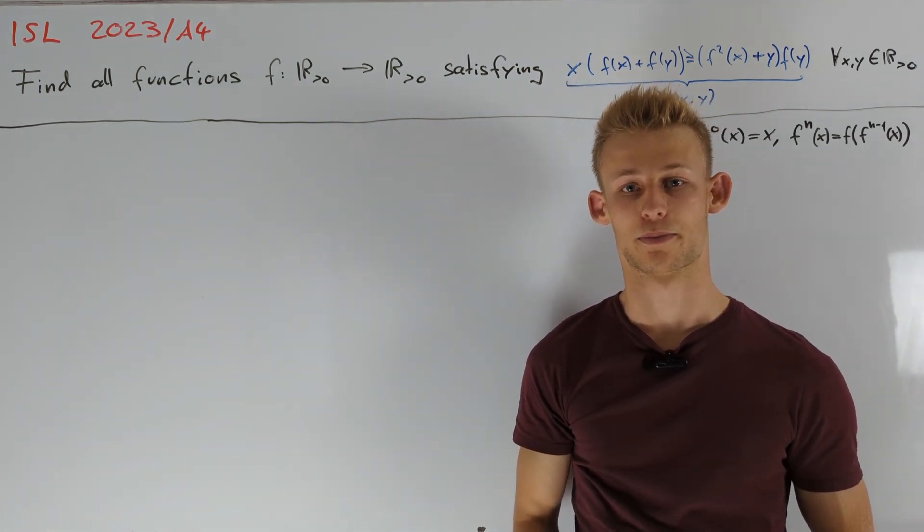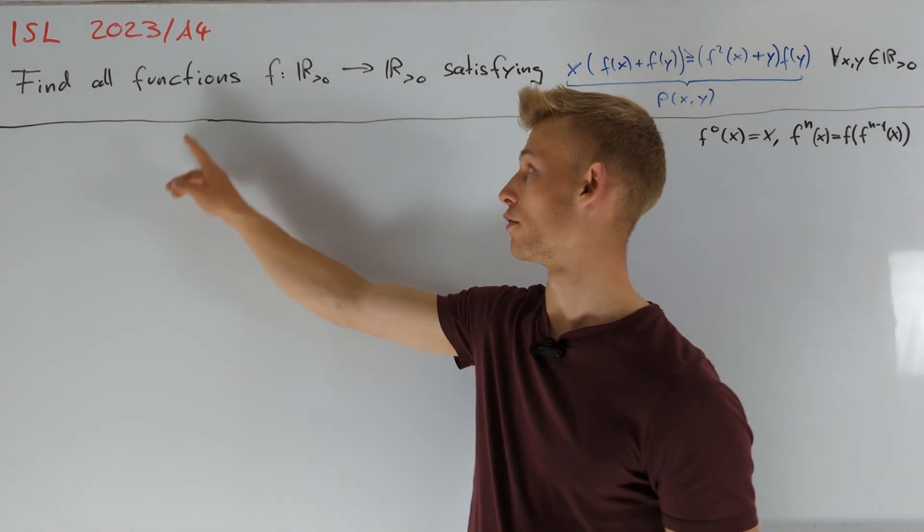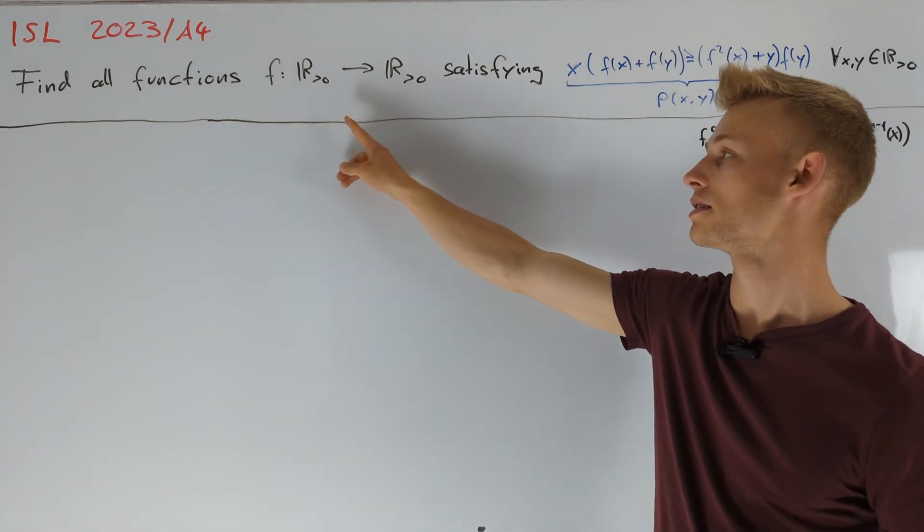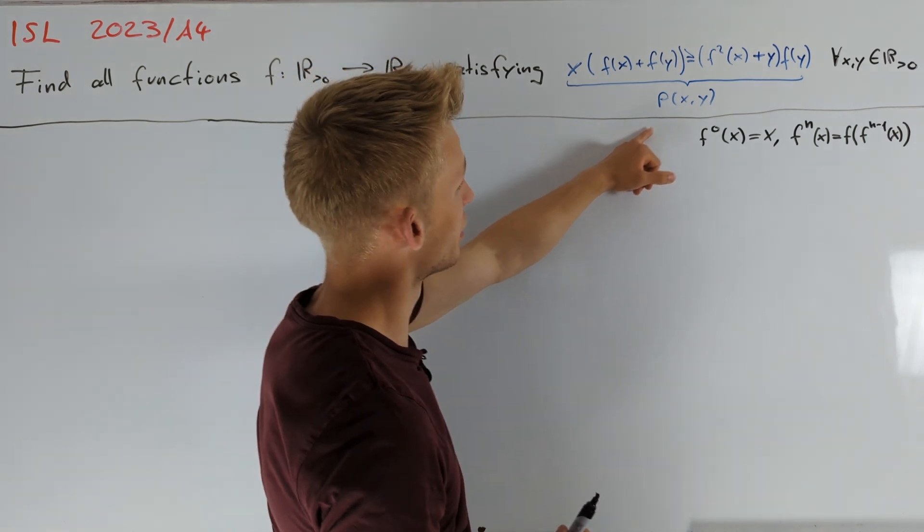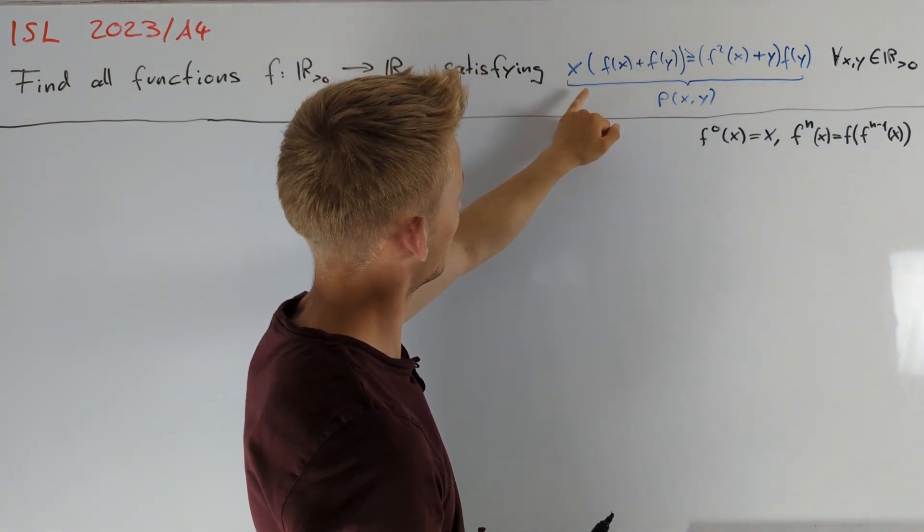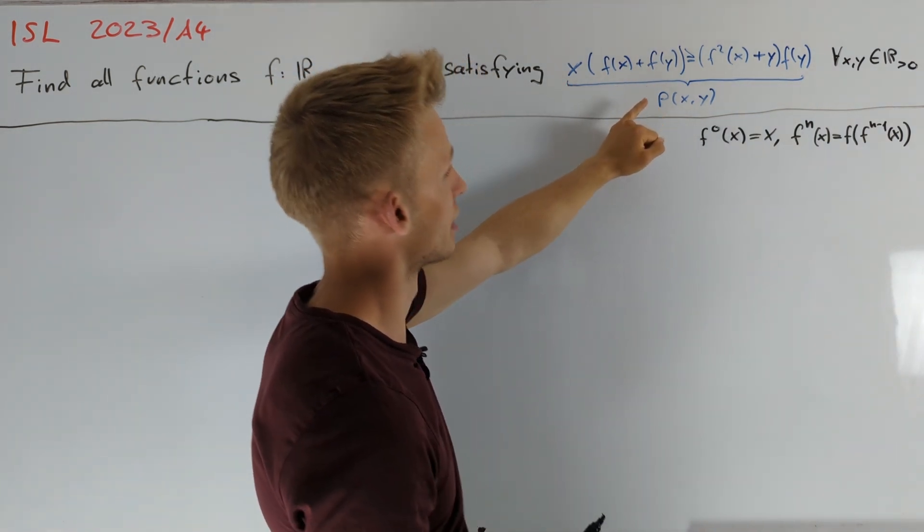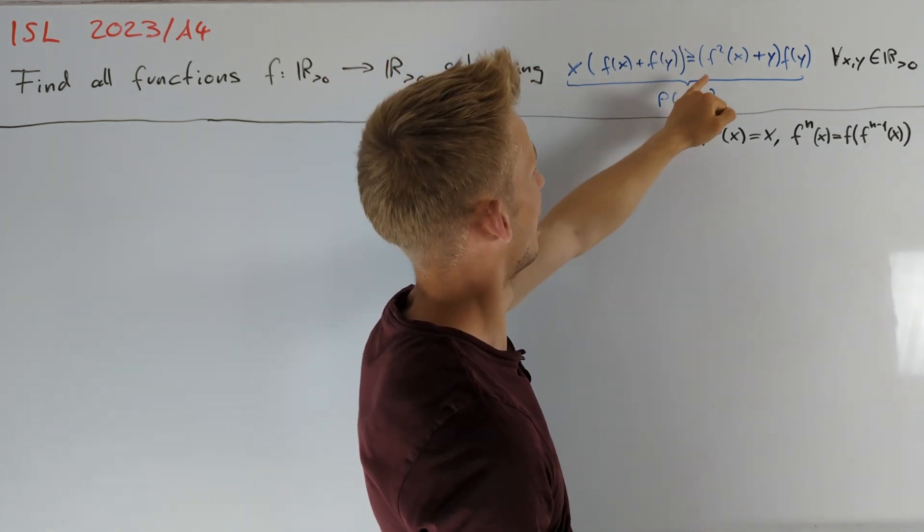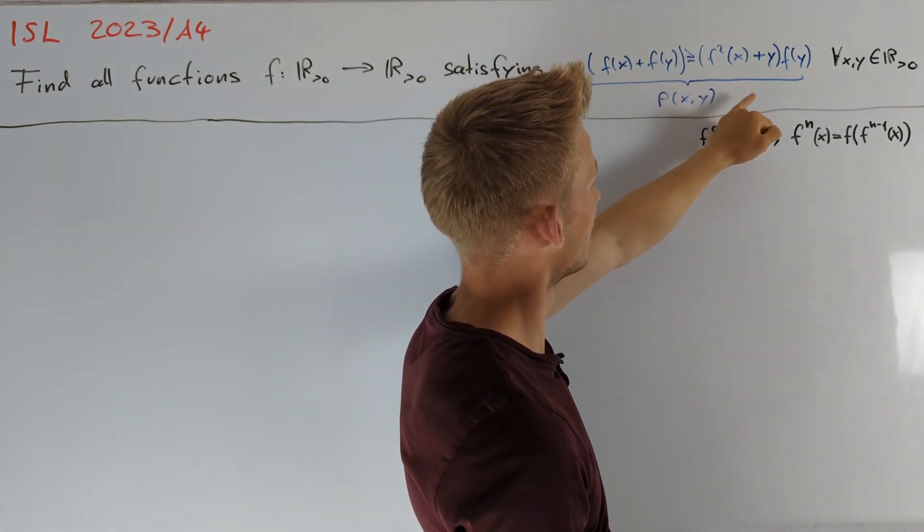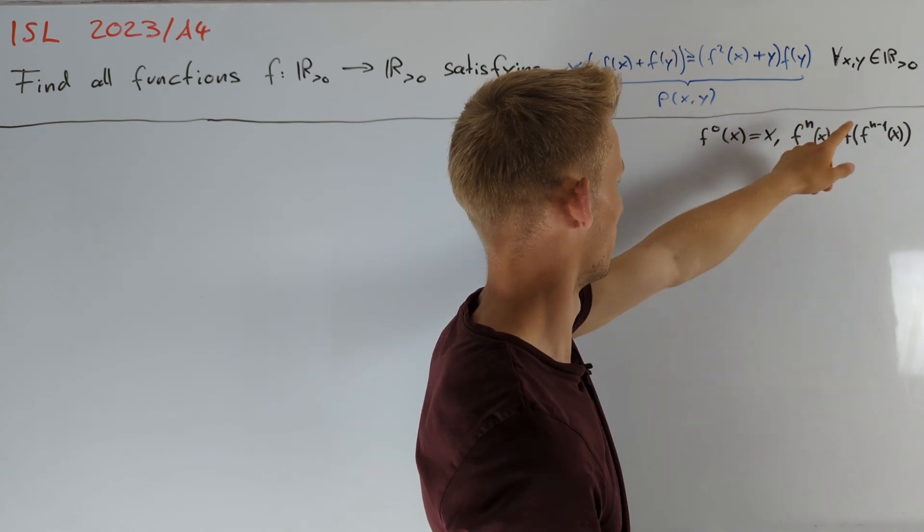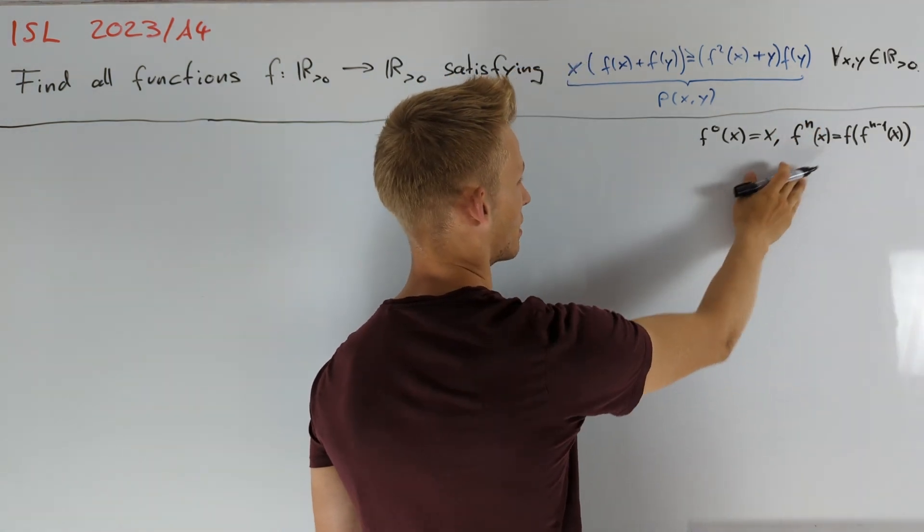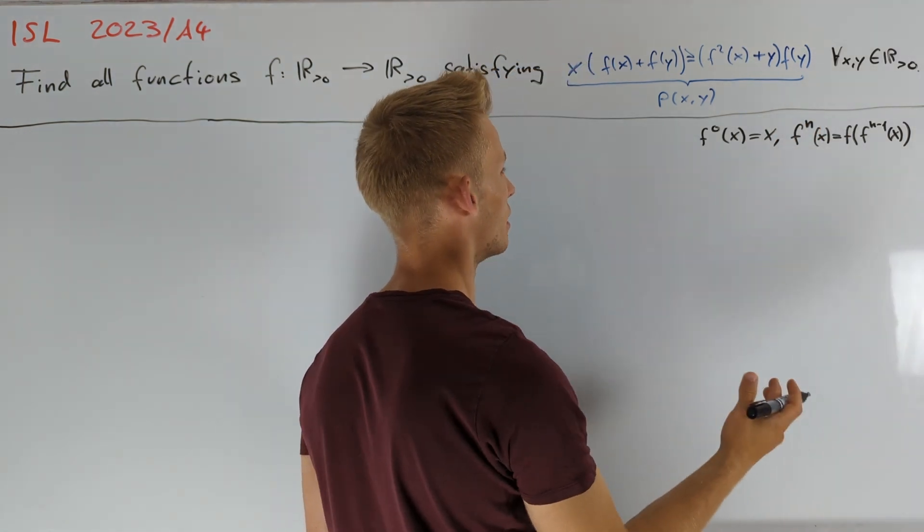At first, let's take a look at the problem statement. We are asked to find all functions from the positive reals to the positive reals satisfying the following inequality p, which says x times f(f(x+y)) plus f(f(x)+y) is greater than or equal to f²(x+y) times f(y) for all positive real numbers x and y. Here, f to the power of n of x means applying f iteratively n times.